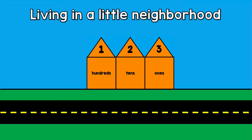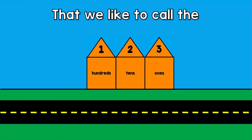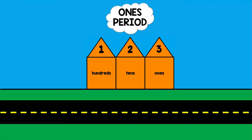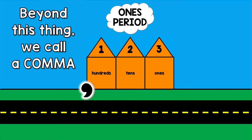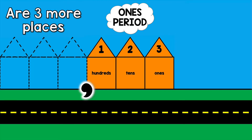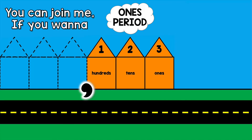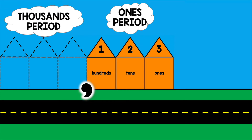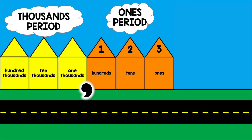Living in a little neighborhood that we like to call the ones period. Beyond this thing we call a comma are three more places. You can join me if you wanna. Welcome to the thousands period, where the one, ten, and hundred thousands live.